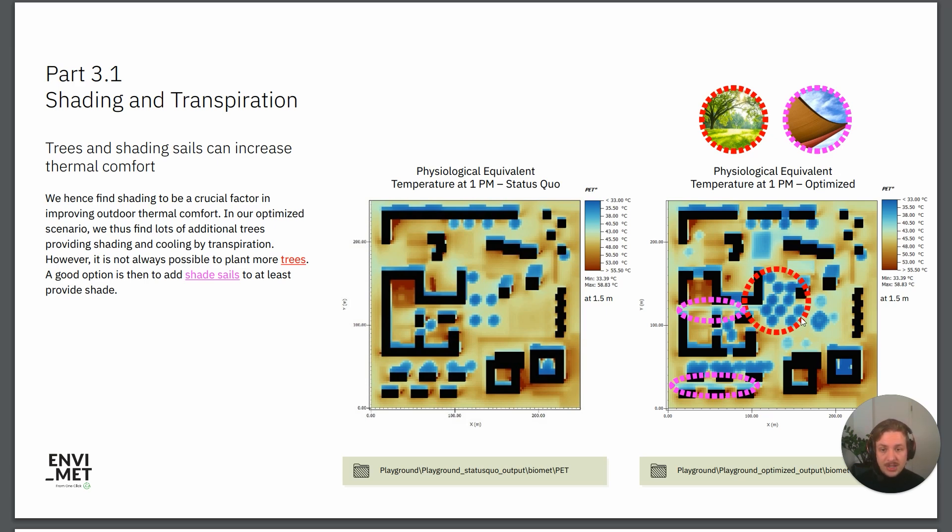We can also, for example, see the impact of shading sails and how they increase the thermal comfort. Our measures that we apply are always color coded, so you can always see exactly what we are implementing and where we are implementing it.